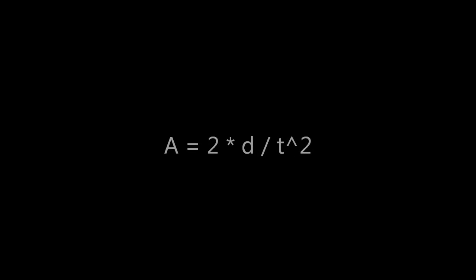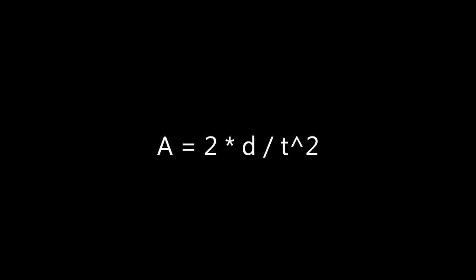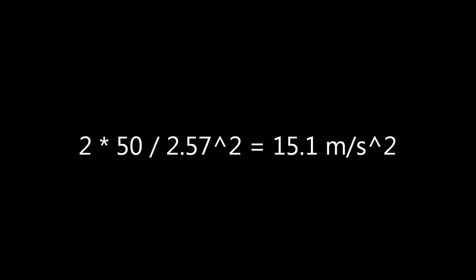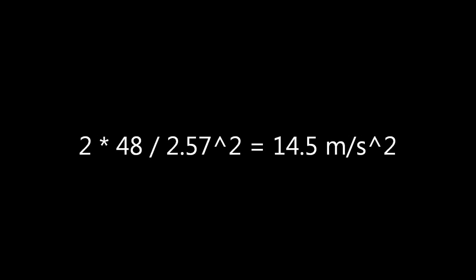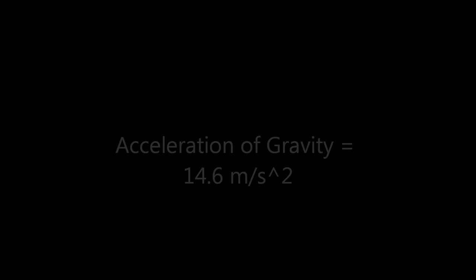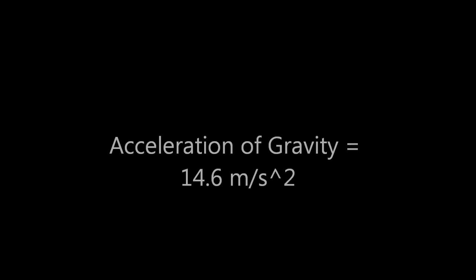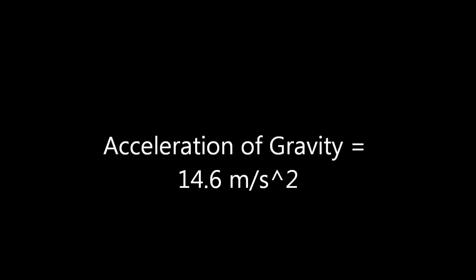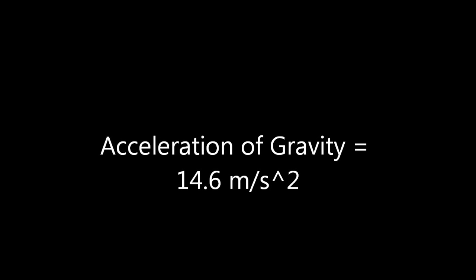Now to find the acceleration of gravity. The formula is: acceleration equals two times distance divided by time squared. Since terminal velocity is so low, it's difficult to get an accurate calculation, so three trials were run: 1 meter in 0.375 seconds, 50 meters in 2.57 seconds, and 48 meters in 2.57 seconds. The average acceleration from these three trials came out to be 14.6 meters per second squared.